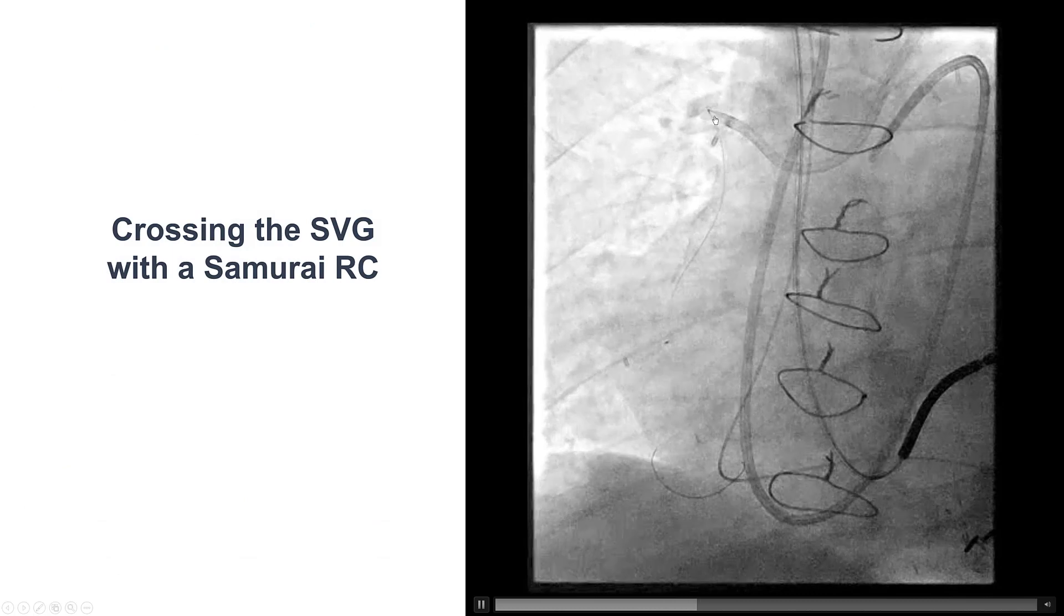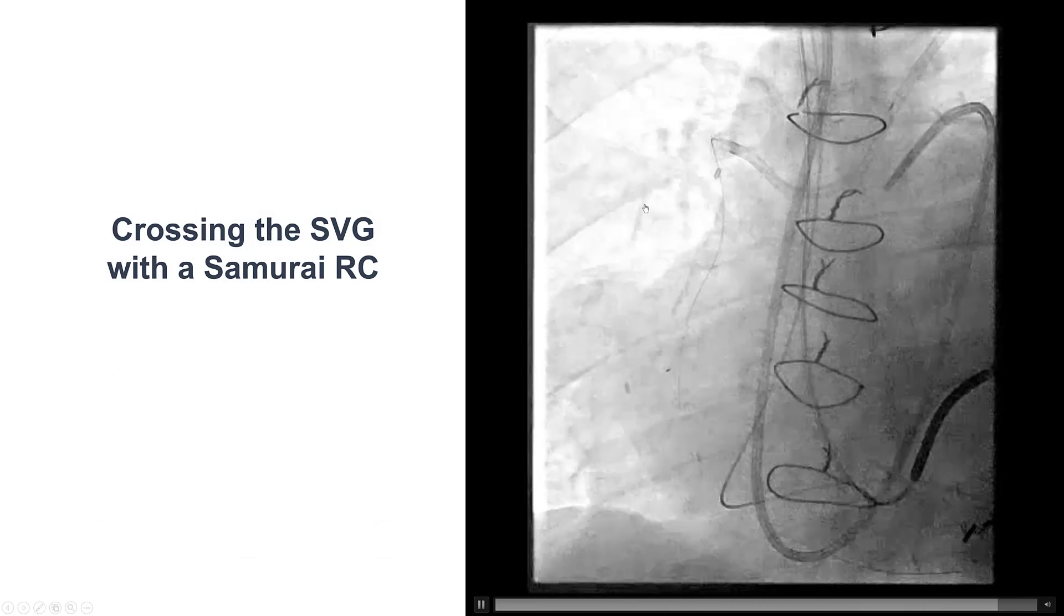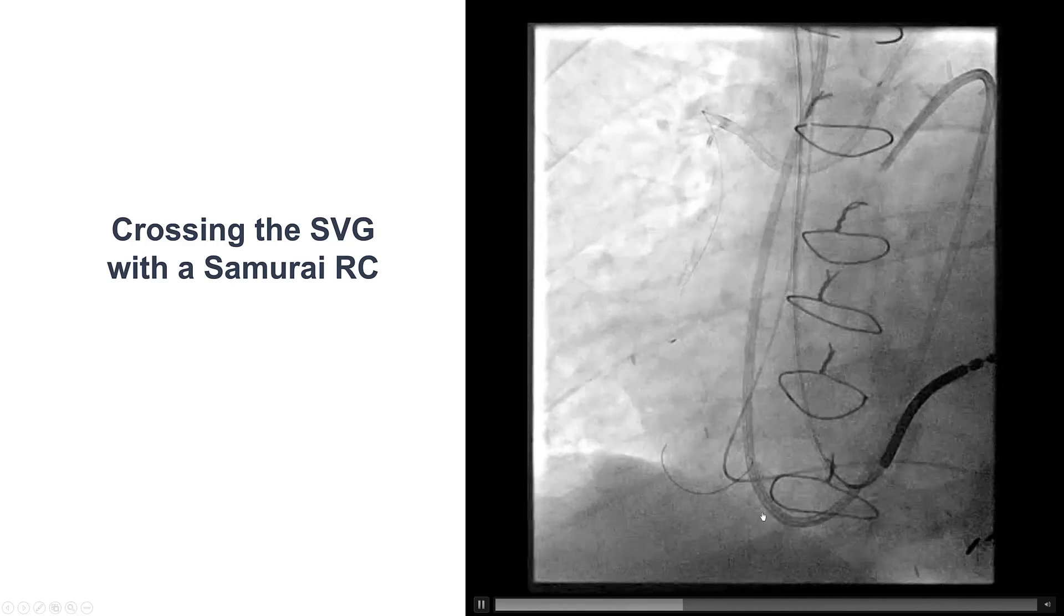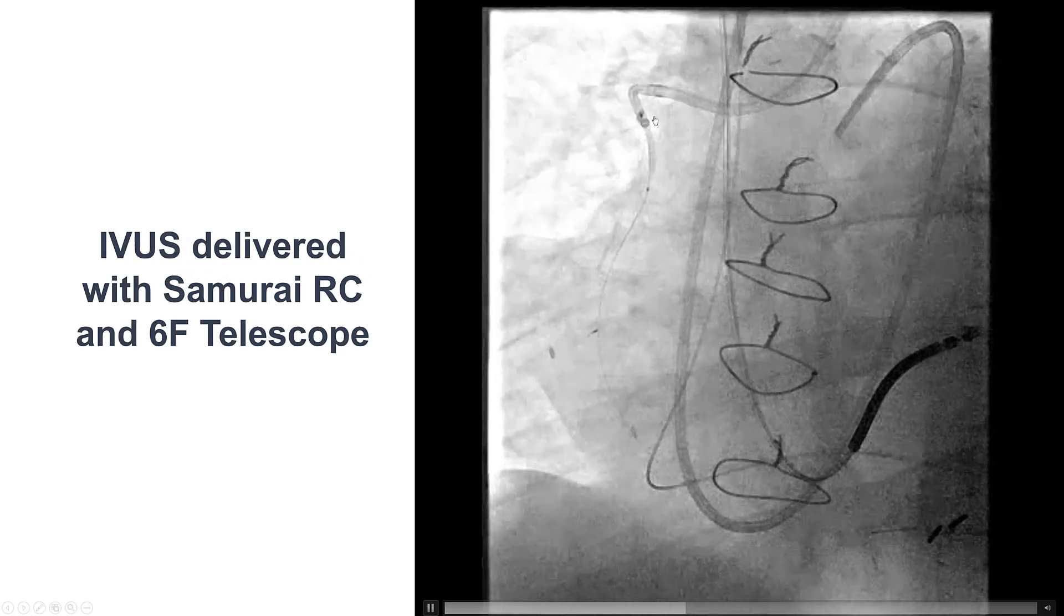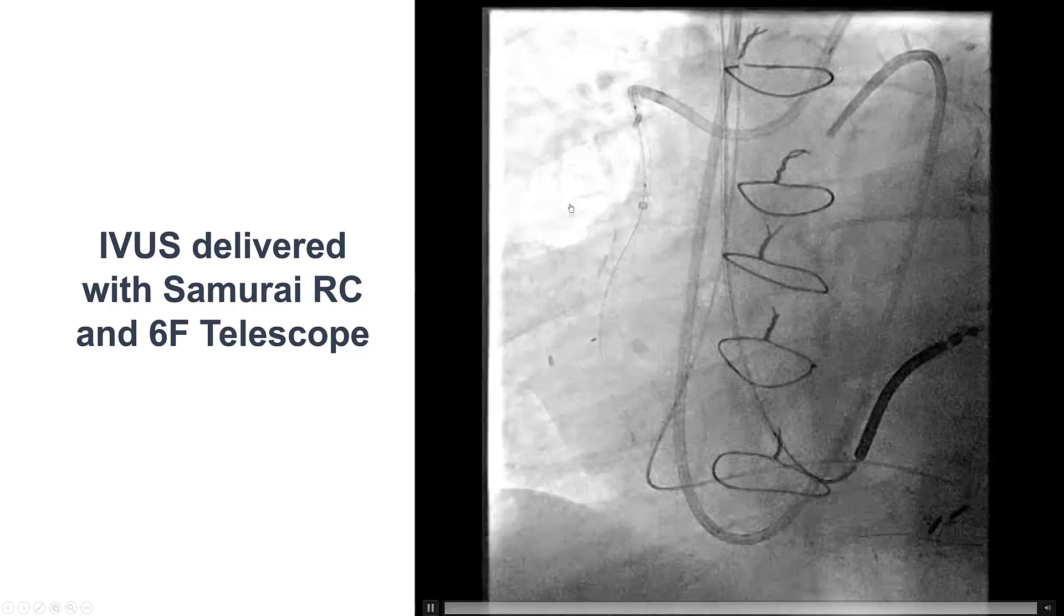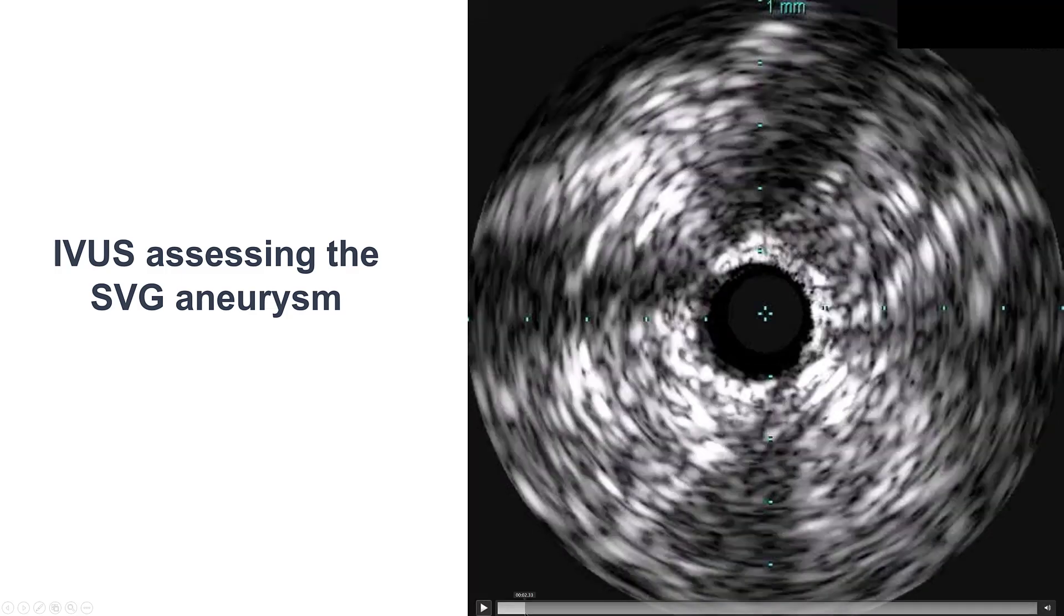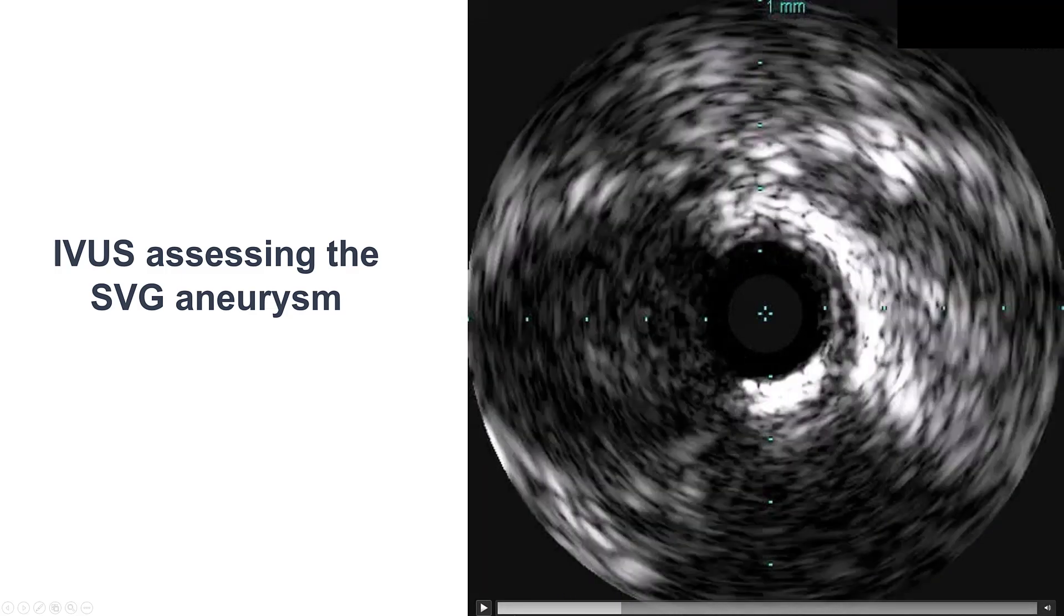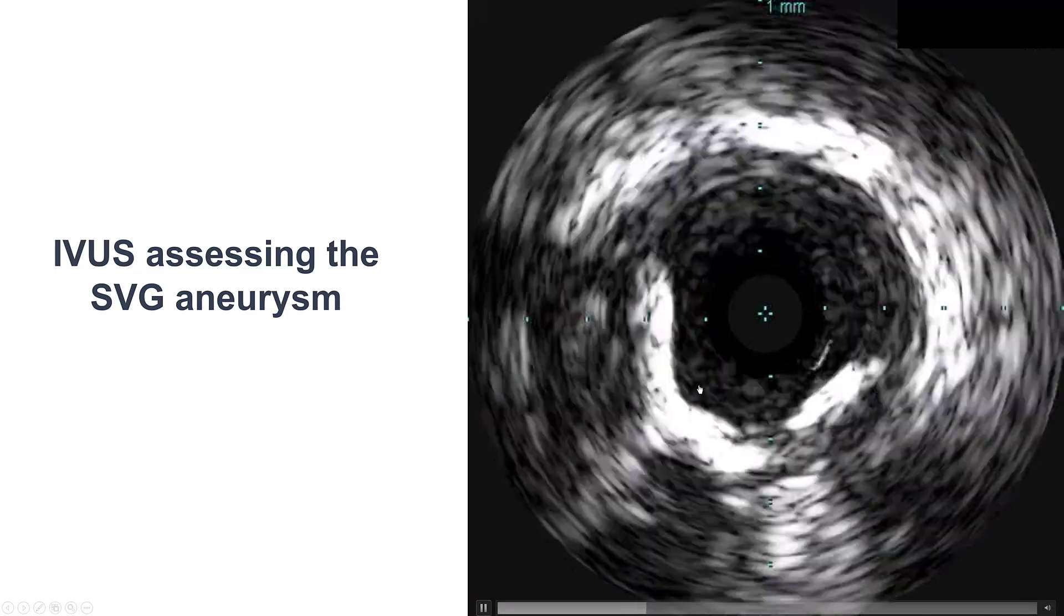Fortunately, the graft was easily crossed with a standard workhorse wire. This is a Samurai RC wire that went through the SVG all the way to the distal right coronary artery. We were able to deliver a guide extension, 6-French telescope, along with an intravascular ultrasound. And these are the images from the intravascular ultrasound. This is the distal native vessel, and then we come more proximal entering into the saphenous vein graft.